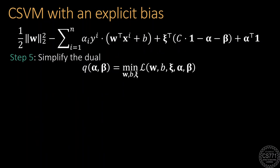Next, we begin simplifying the dual problem by trying to minimize the Lagrangian with respect to the primal variables. Note, we now have three primal variables.